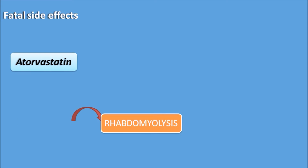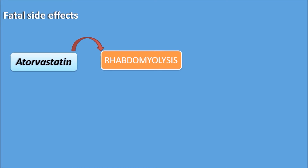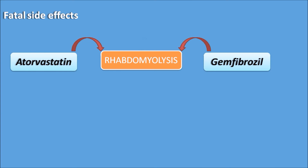Similarly, a fatal side effect of this combination is clinically very important. Atorvastatin produces rhabdomyolysis — a disintegration of muscle where muscle is gradually lost by the action of the drug. Gemfibrozil also produces rhabdomyolysis, so the combined effect of atorvastatin and gemfibrozil leads to severe muscle loss and muscle pain.